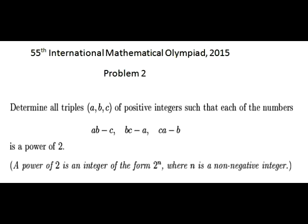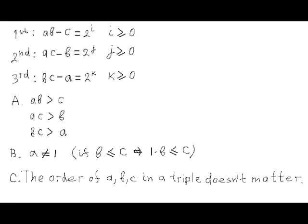This is problem number two from International Math Olympiad 2015. Let's call the requirement for the expression AB minus C, where AB and C are positive integer numbers, the first equation, and the requirement for the expression AC minus B the second equation, and the requirement for the expression BC minus A the third equation. The exponents in the powers of two in their respective right-hand sides can be zero or positive integer numbers.